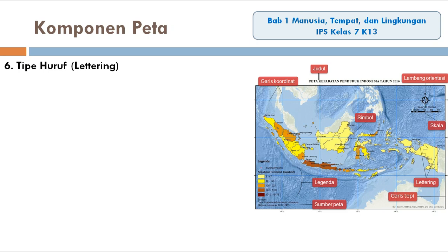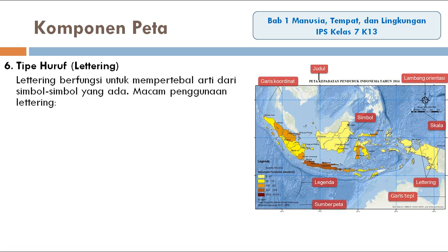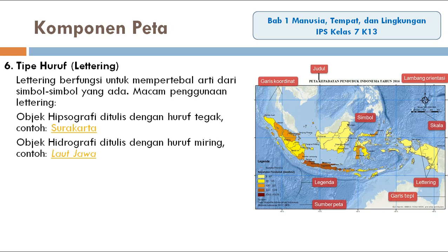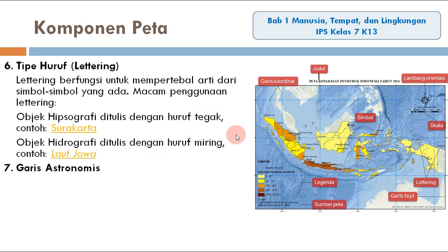Berikutnya, tipe huruf atau lettering. Lettering berfungsi untuk mempertebal arti dari simbol-simbol yang ada. Macam-macam penggunaan lettering: yang pertama, untuk objek hipsografi biasanya ditulis dengan menggunakan huruf tegak. Yang kedua, objek hidrografi ditulis dengan menggunakan huruf miring. Ini contohnya, kalau kita perhatikan di peta ini ada lettering, walaupun tidak terlalu kelihatan.